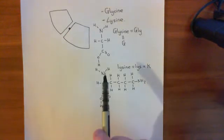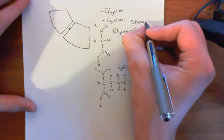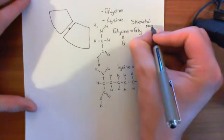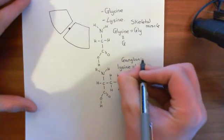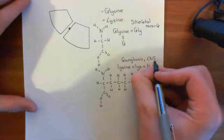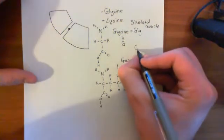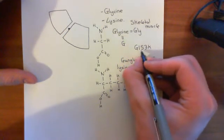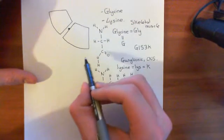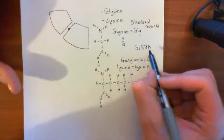What you can do is take the skeletal muscle nicotinic acetylcholine receptor, where this residue is glycine, and replace it with the lysine that you have in the ganglionic and CNS nicotinic acetylcholine receptors. If you do that, the mutant receptor, which we call the G153K mutant - G for glycine at position 153, mutated to K, a lysine -